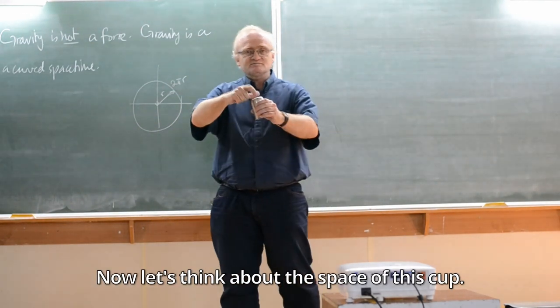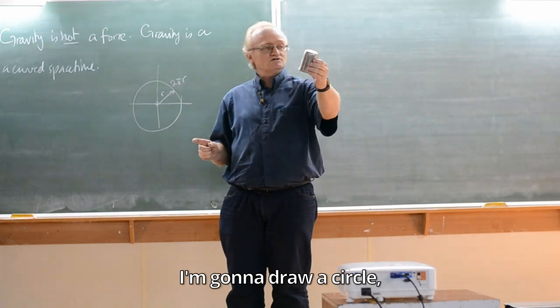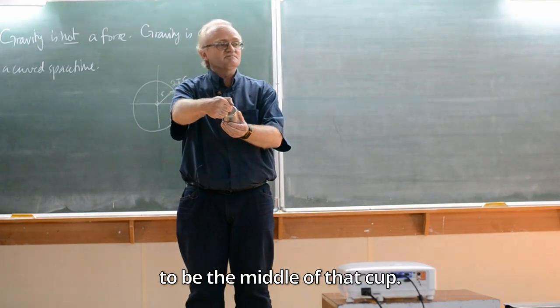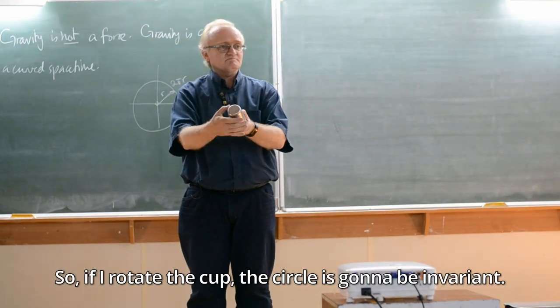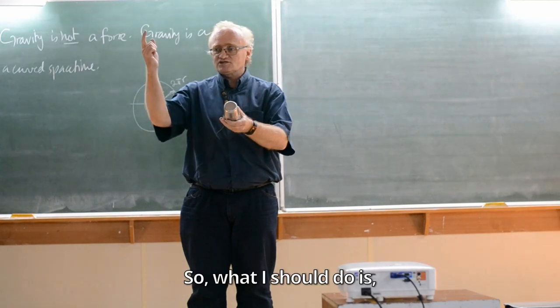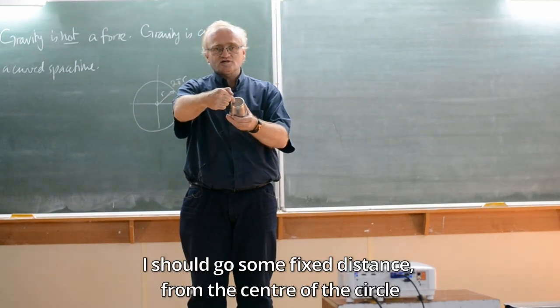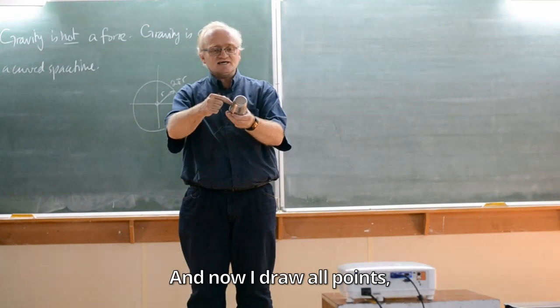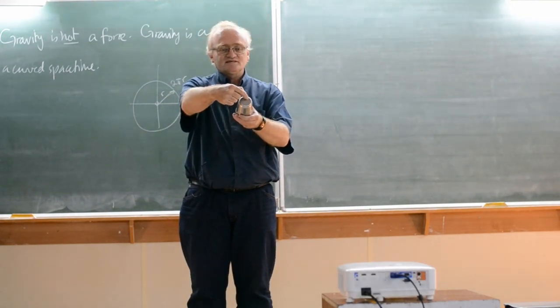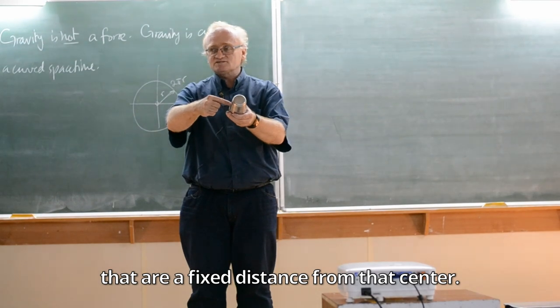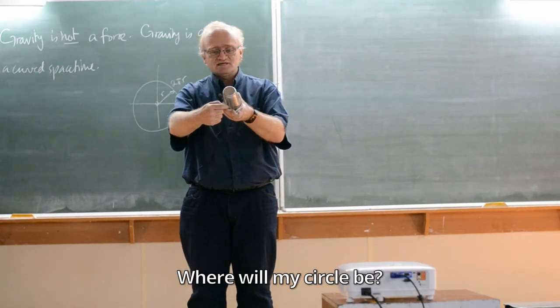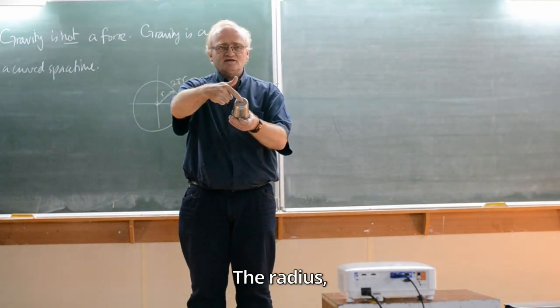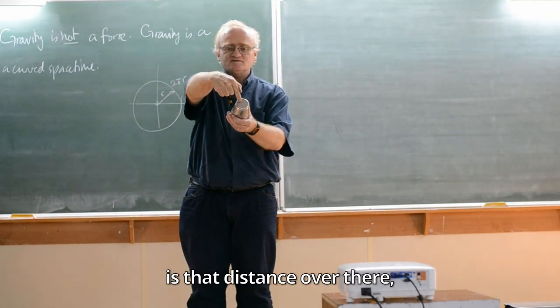Now let's think about the space of this cup. I'm going to draw a circle and I would like the center of the circle to be the middle of that cup. So if I rotate the cup, the circle is going to be invariant. What I should do is I should go some fixed distance from the center of the circle, which will be down to here on the cup. Now I'll draw all points that are a fixed distance from that center. Where will my circle be? It will be this length over there.